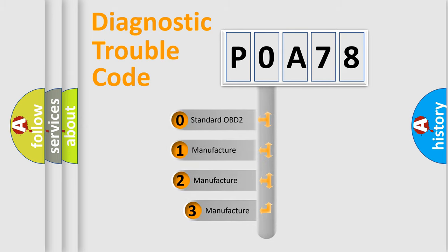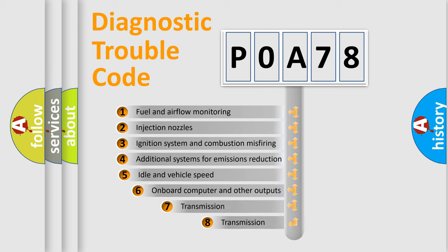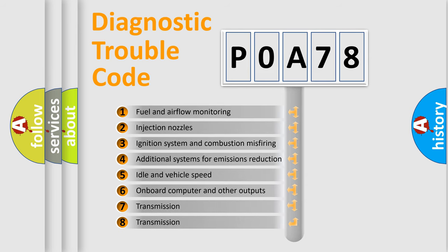If the second character is expressed as zero, it is a standardized error. In the case of numbers 1, 2, 3, it is a more prestigious expression of the car-specific error. The third character specifies a subset of errors.